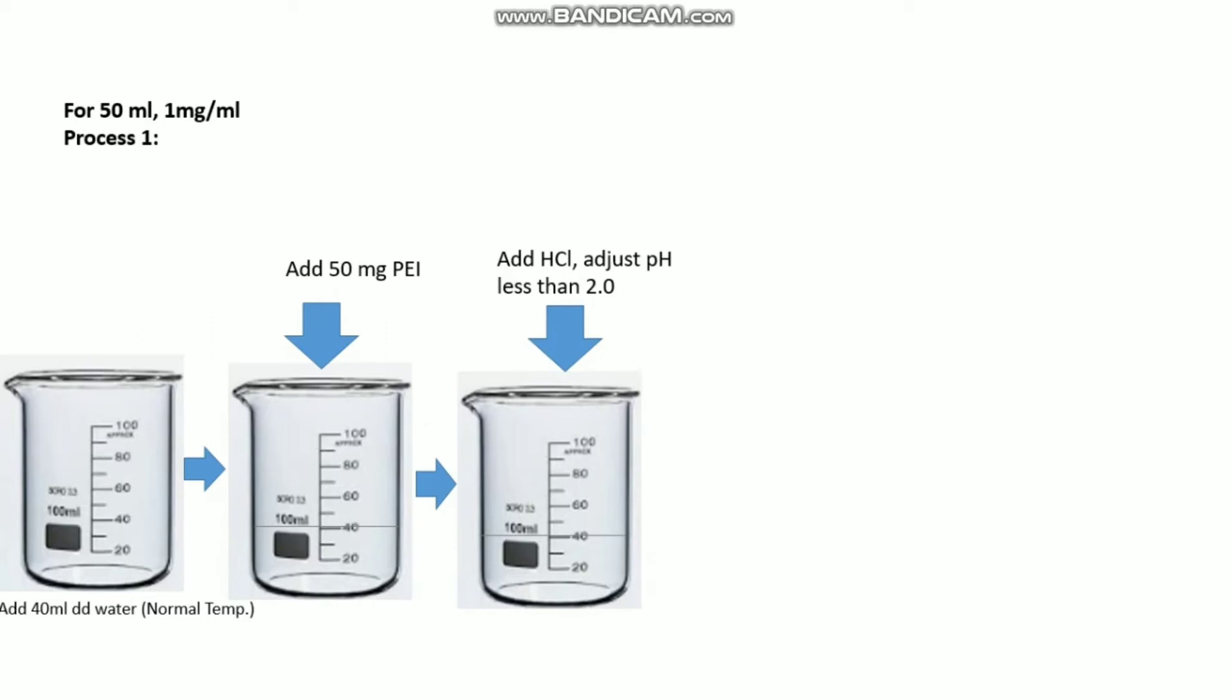Then add HCl and adjust pH to less than 2. In acidic pH, PEI dissolves normally.